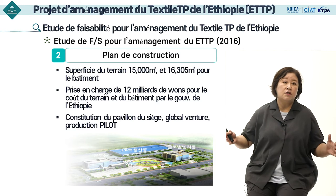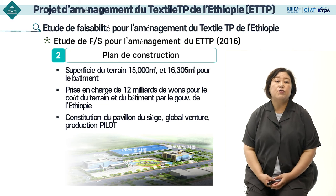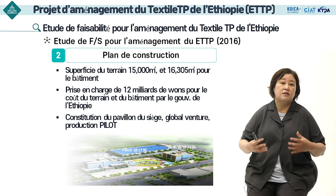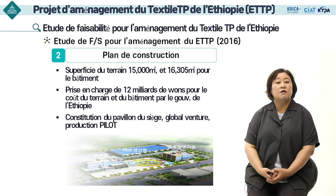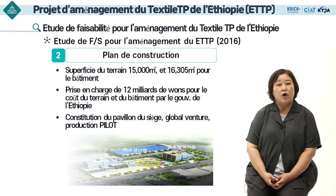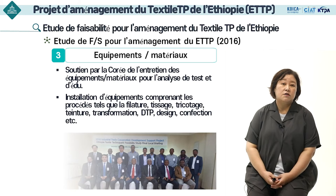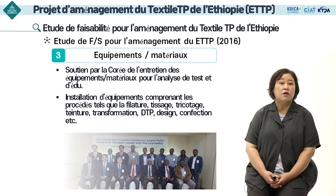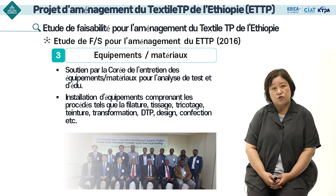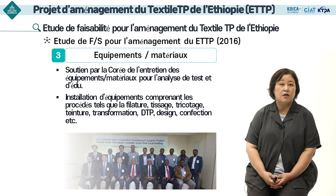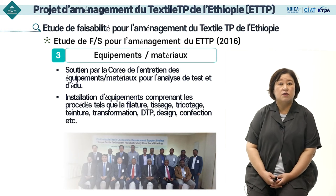Le terrain et le coût de construction du bâtiment ont été pris en charge par la partie éthiopienne. Le plan de construction pour le pavillon du siège, le Global Venture et celui de la production pilote a été établi. La Corée a fourni un soutien pour le matériel et l'équipement, notamment les équipements de test et d'analyse et le matériel pour la formation, couvrant l'ensemble des procédés tels que la filature, le tissage, le tricotage, la teinture, la transformation, l'impression textile numérique, le design et la confection.